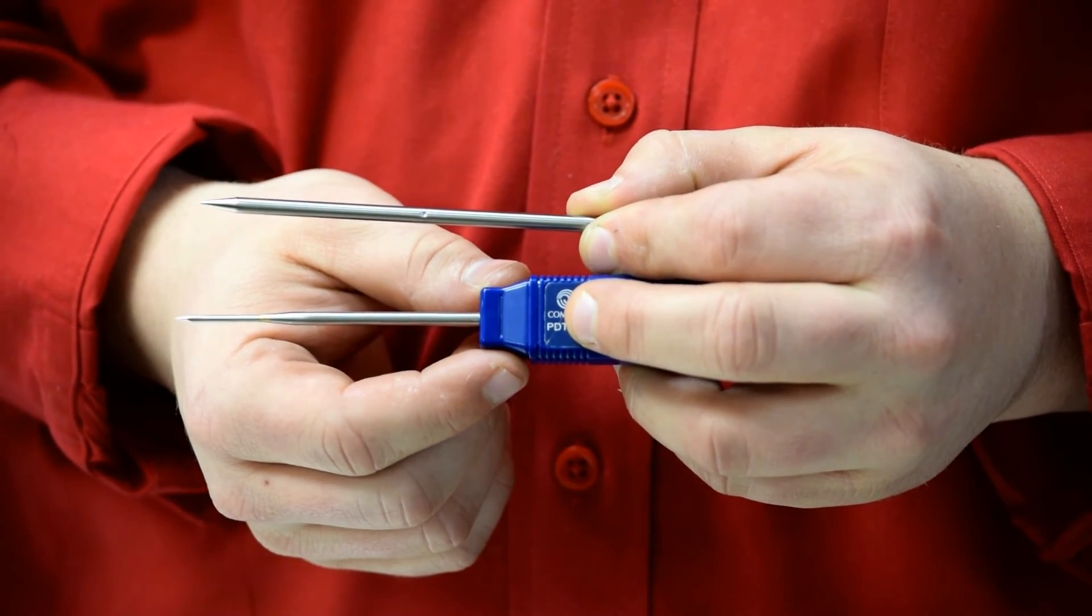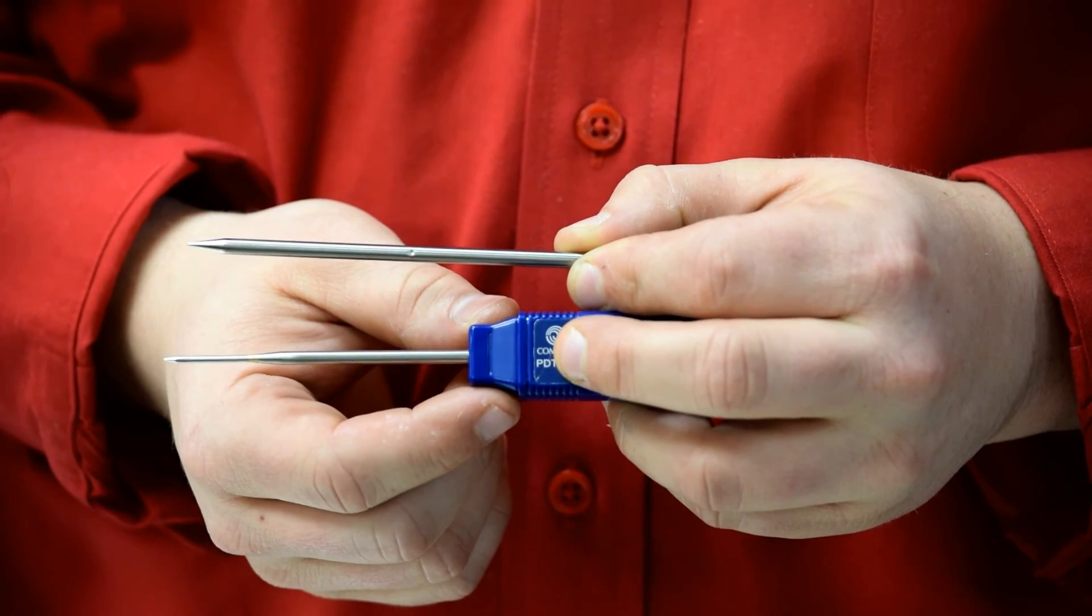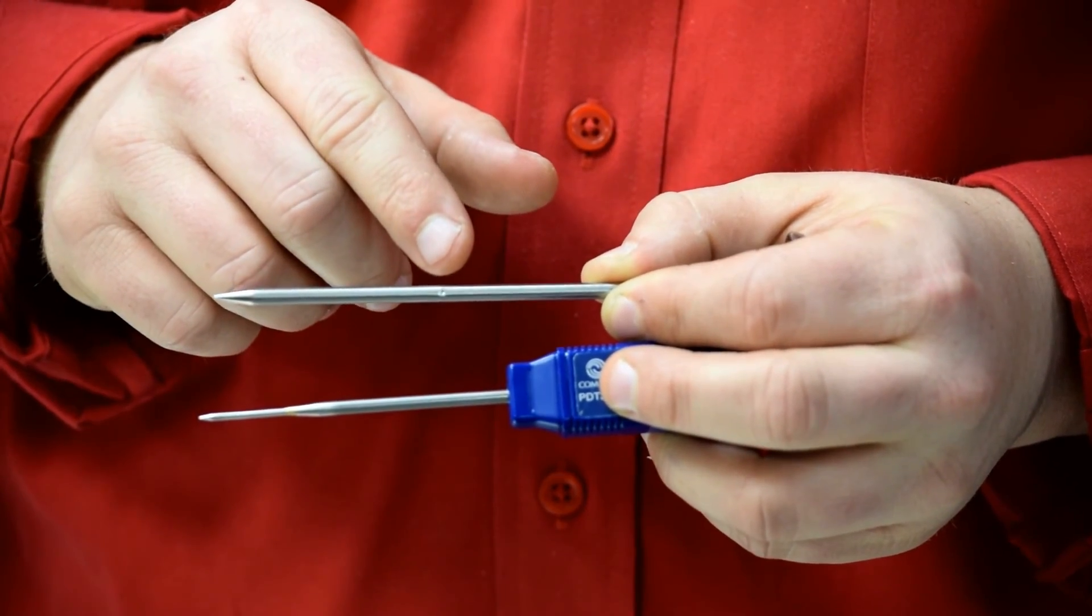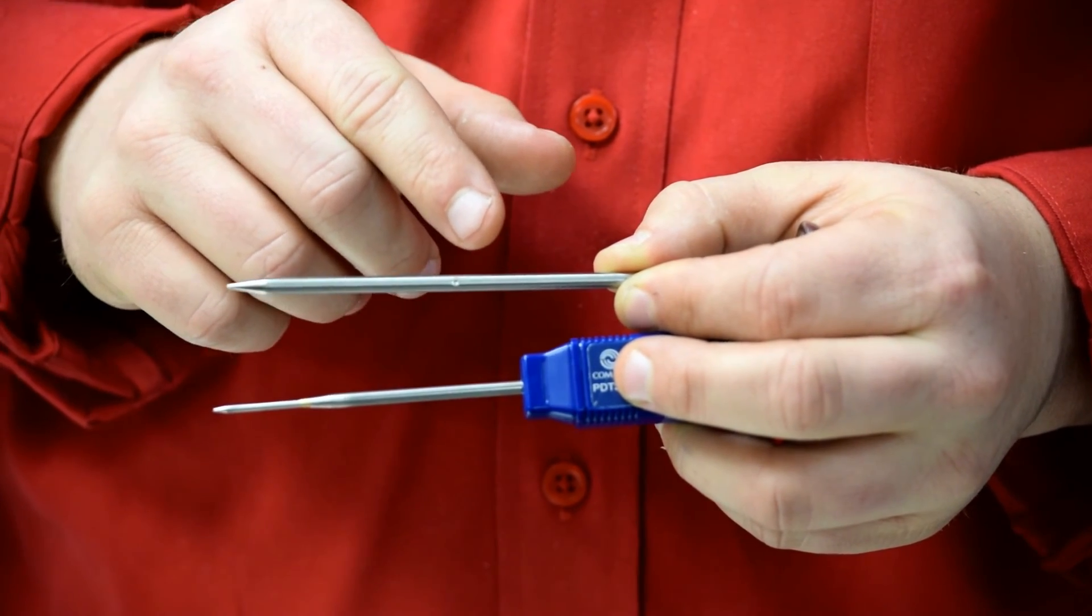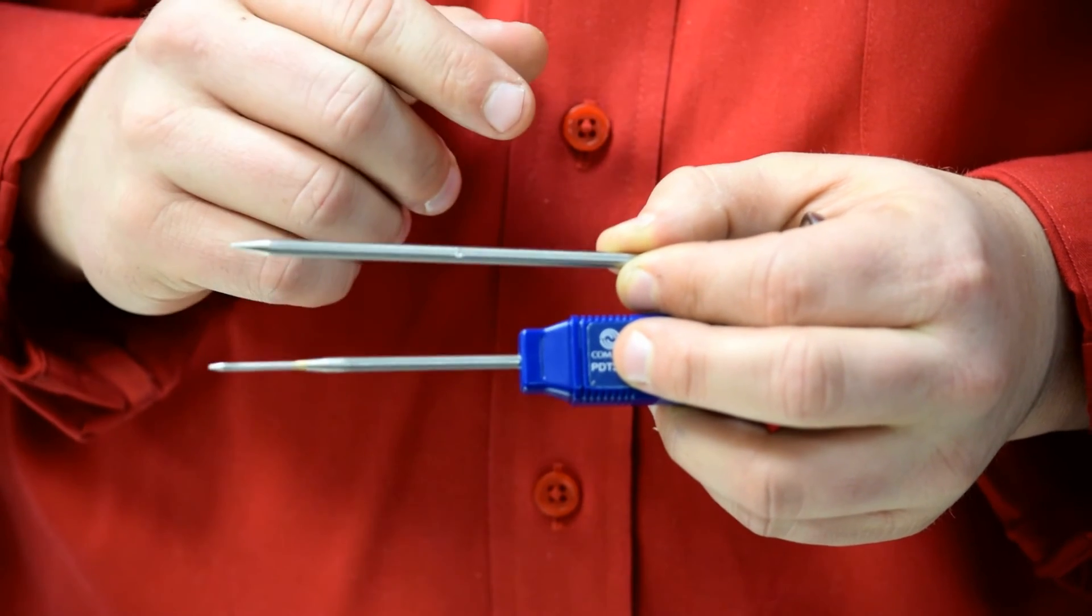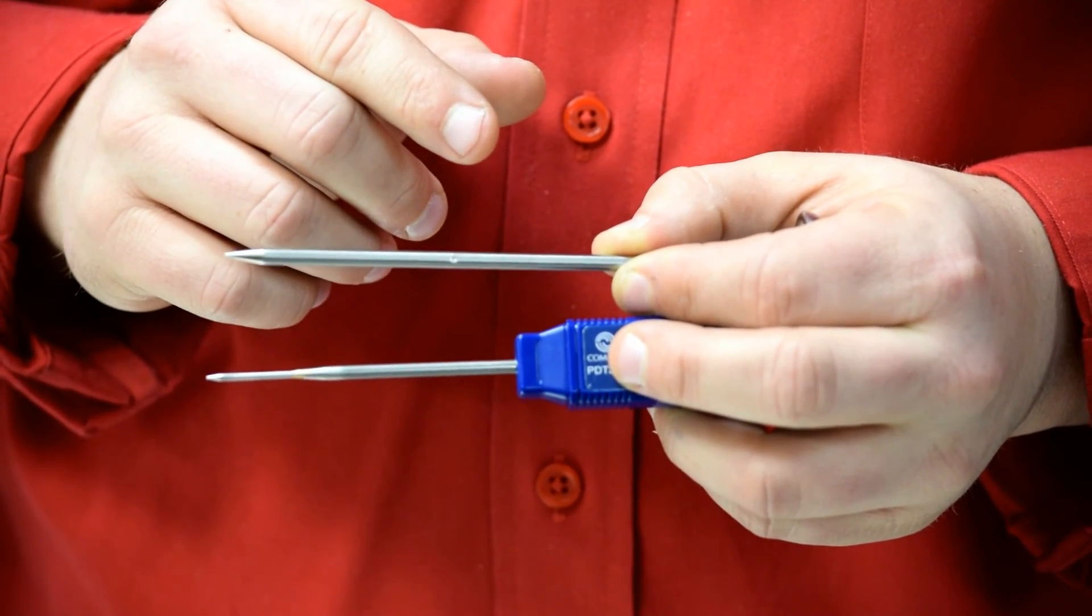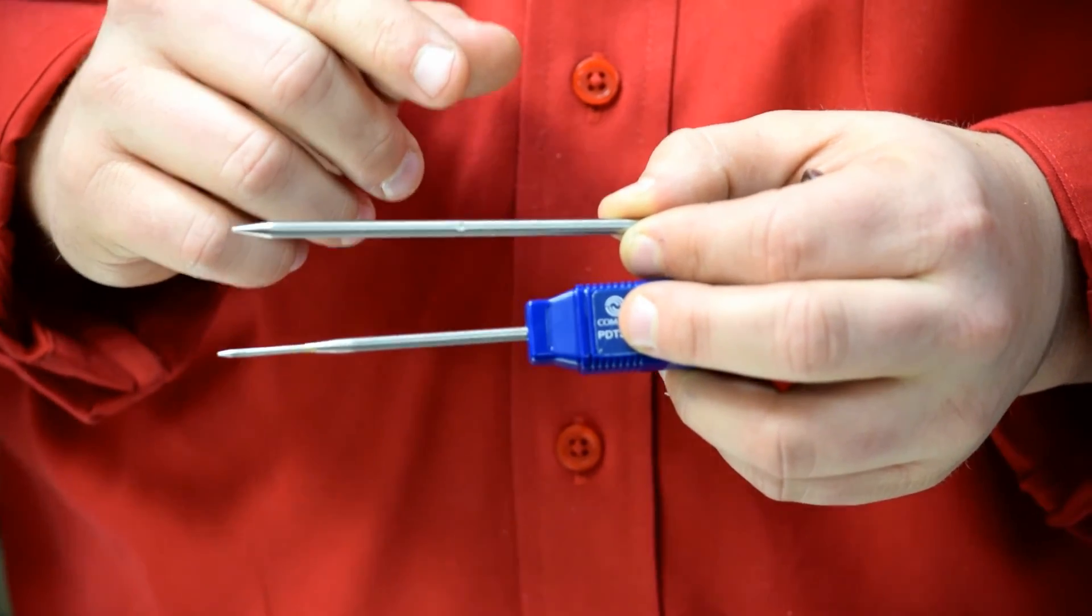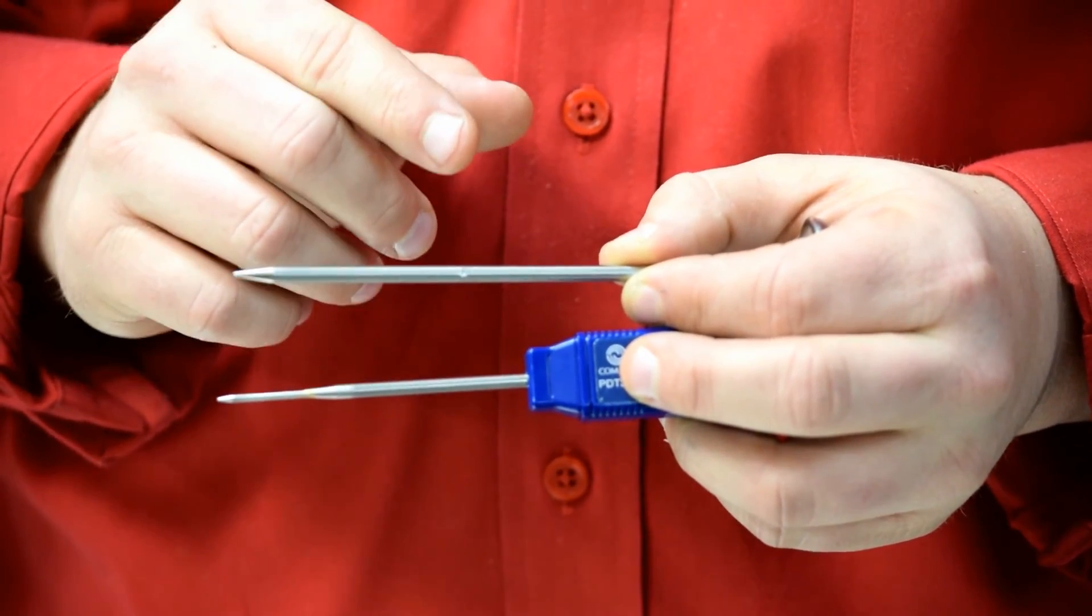Compare that to a traditional bimetallic stem thermometer which must be inserted all the way up to the dimple in order to get its most accurate reading and also notice the difference in the thickness of the probe. The PDT-300 has a much thinner probe which allows the user to test thinner cuts of meat and that smaller puncture wound preserves the natural juices of the meat.